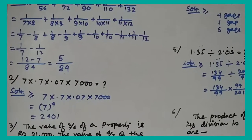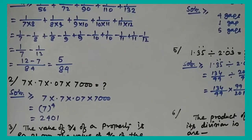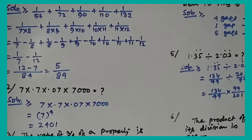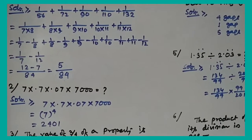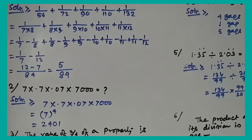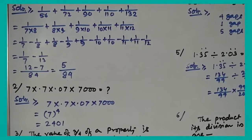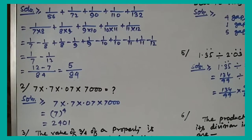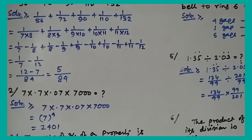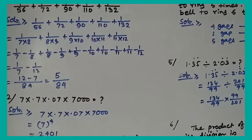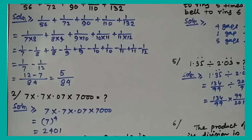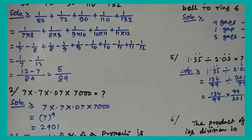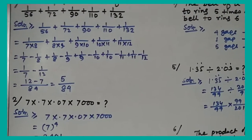Question number 2: 7 × 0.7 × 0.07 × 7000. Here 0.7 = 7/10, 0.07 = 7/100. So we have 7 × 7/10 × 7/100 × 7000. The 1000 cancels, giving 7⁴ = 2401.